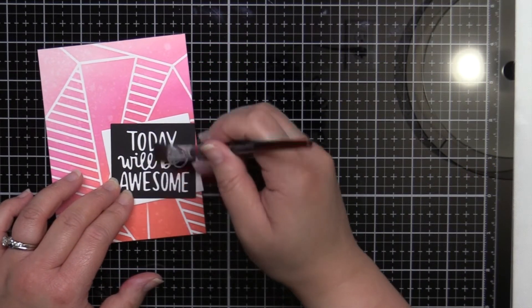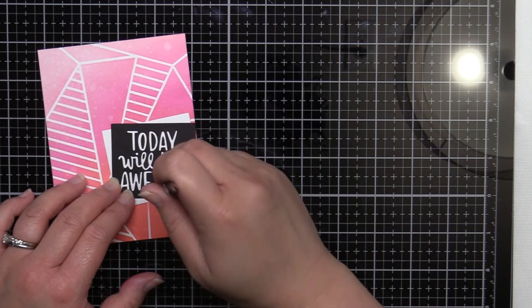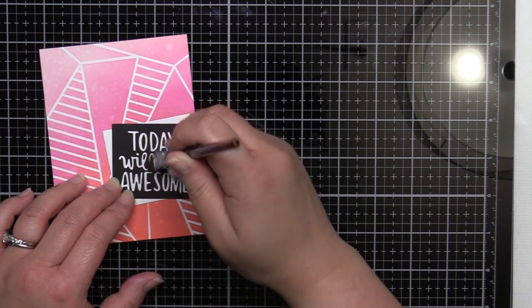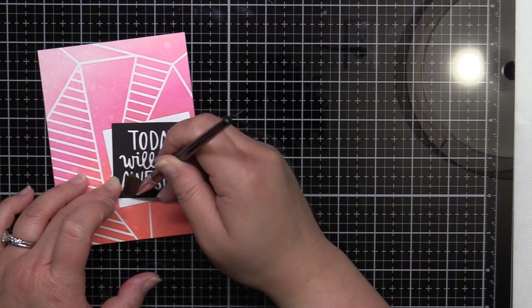Once it was totally finished and dry, I went over the die with a stiff paintbrush to remove any excess paper bits that were sticking to the die for a nice clean look.